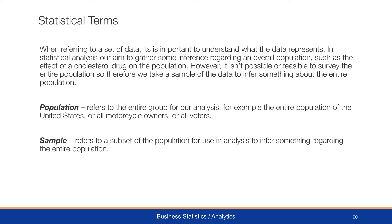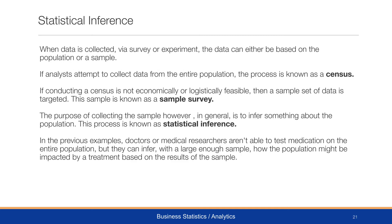It isn't possible to survey the entire population — say of the United States or of the world — so we take a subset of it and try to infer something about the entire population. The population refers to an entire group of our analysis, for example, the entire population of the United States, all motorcycle owners, or all voters. A sample refers to a small subset of the population used in analysis to infer something regarding the entire population. When we collect data through survey, experiment, or otherwise, the data can be based on the population or a sample.